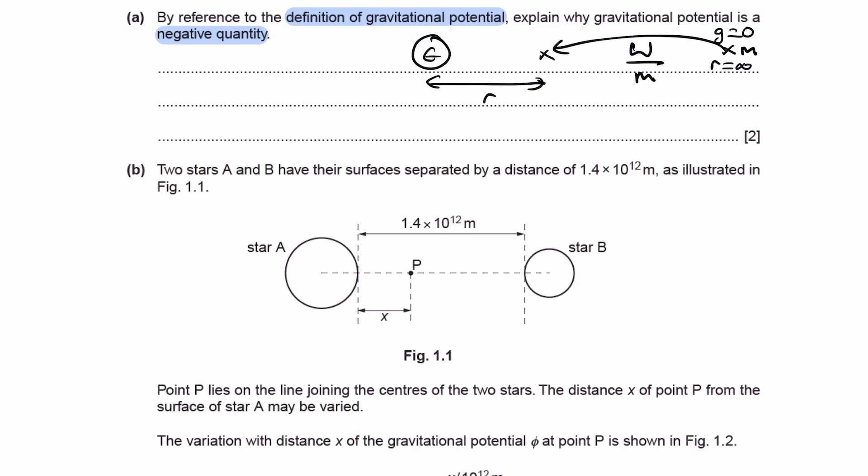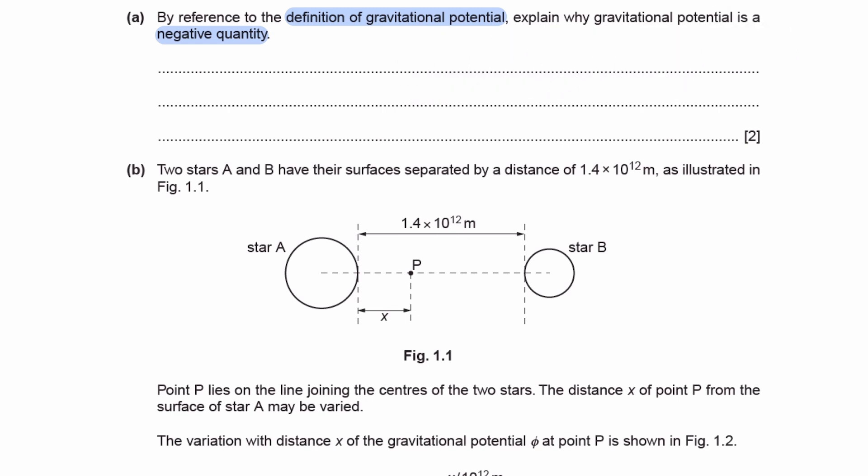Gravitational potential and potential energy are both defined to be zero infinitely far away. So let's think about dropping a mass on the surface of the Earth. If we drop a mass, we lose GPE and we gain kinetic energy, because the gravitational force is attractive — that causes the GPE to decrease and kinetic energy to increase as a result.